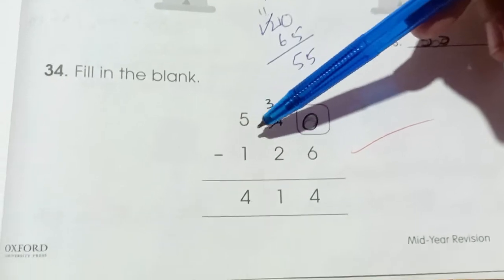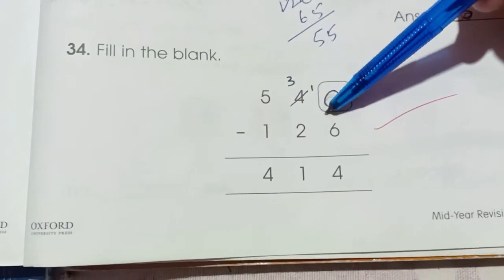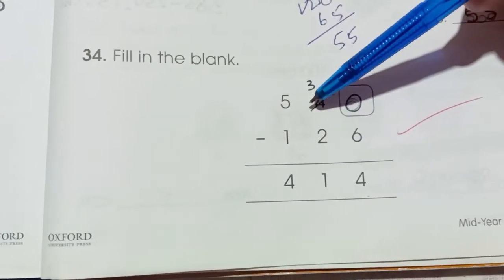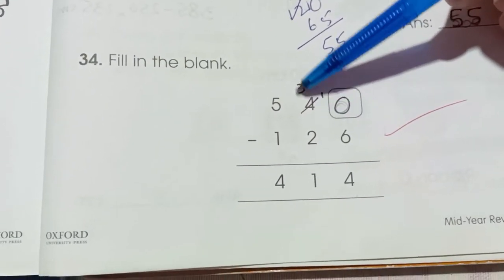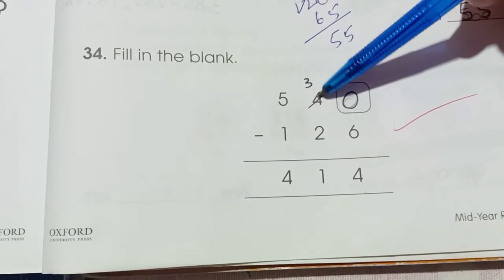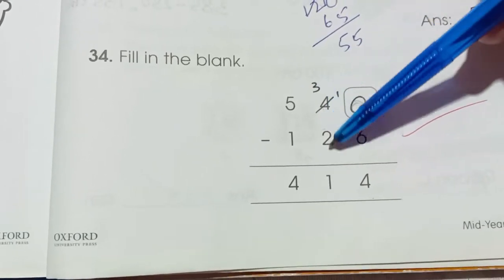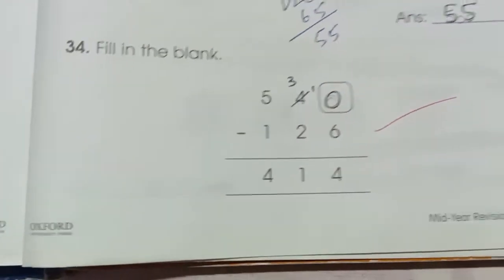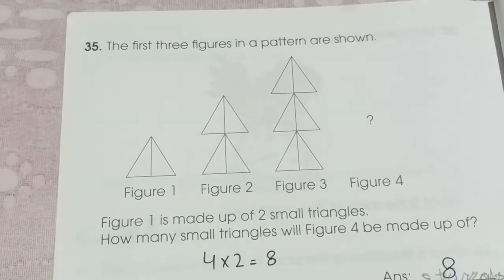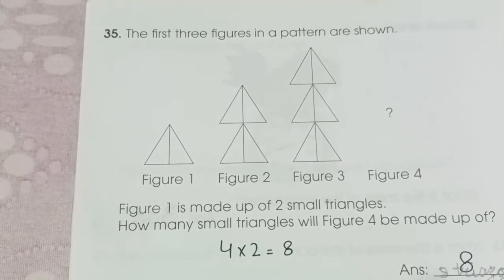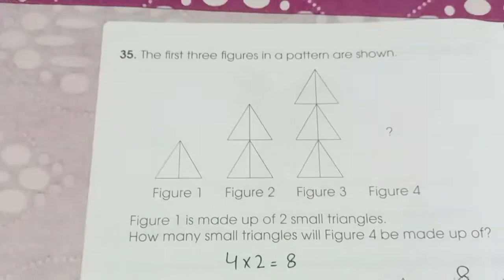Number 34: Fill in the blanks — a subtraction problem. 10 minus 6 is 4. We borrow from the next column: 3 minus 1 (after borrow) gives the remaining digits.